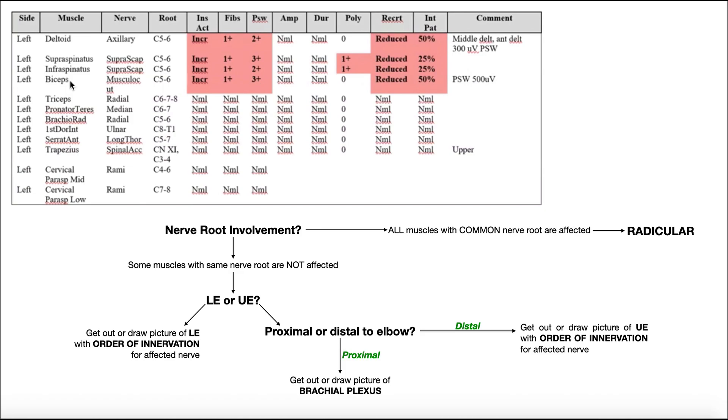We're talking proximal to the elbow. And so it makes it more likely here that it's actually an issue somewhere in the brachial plexus. And so we need to either get out or draw a picture of the brachial plexus.